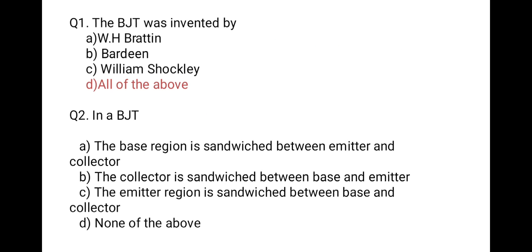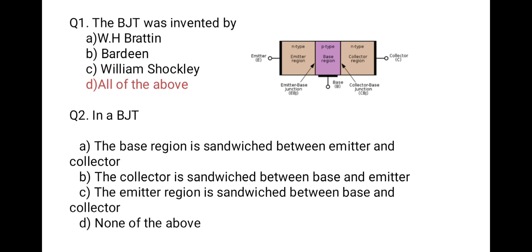The next question is: in a BJT — first option, the base region is sandwiched between emitter and collector; second, the collector is sandwiched between base and emitter; third, the emitter region is sandwiched between base and collector; last, none of the above. The structure of BJT has emitter as the first region, base in the middle, and collector last. Emitter is heavily doped and moderate in size, base is lightly doped and small in size, and collector is moderately doped and large in size. So the middle region (base) is sandwiched between emitter and collector — the first option is correct.